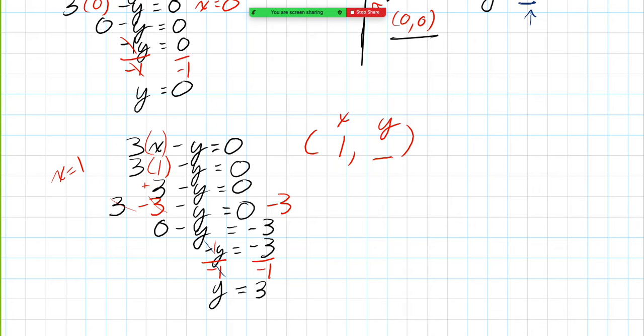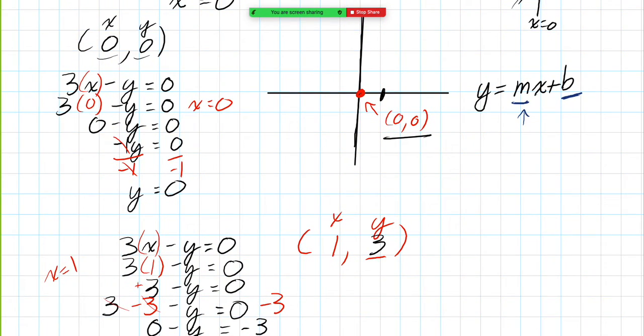So what we've now done is we've found a second coordinate. This second coordinate, when x is 1. So here's 1, 2, 3, 4, 5, and 2, 3, 4, 5.